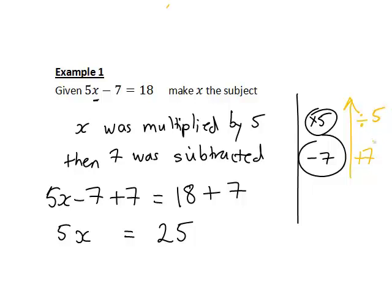So continuing to work backwards to undo the steps that happened to x, we now need to divide both sides of the equation by 5.